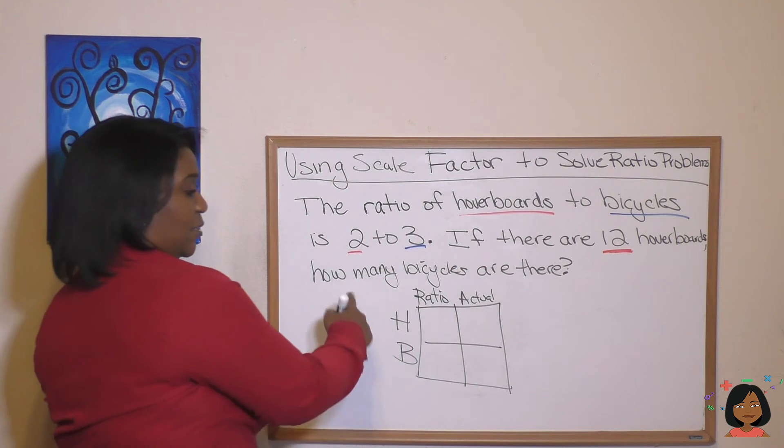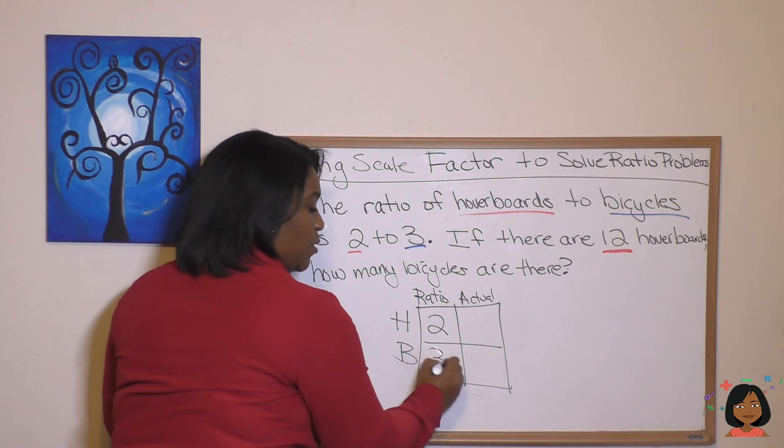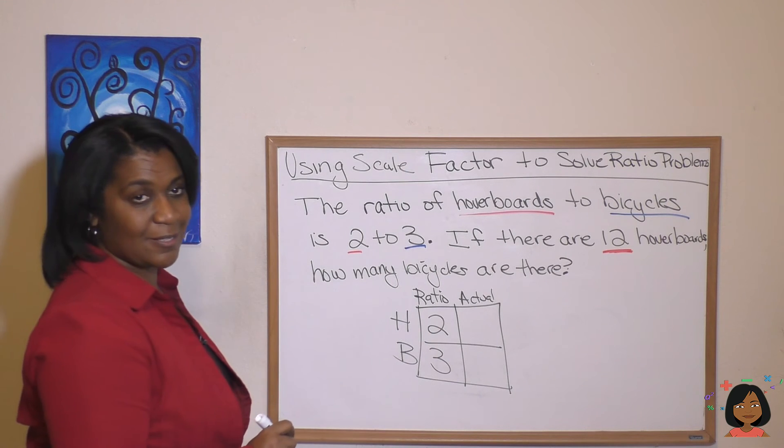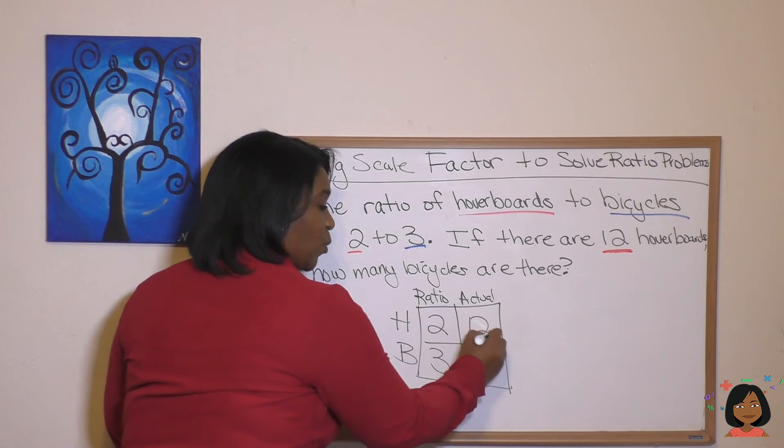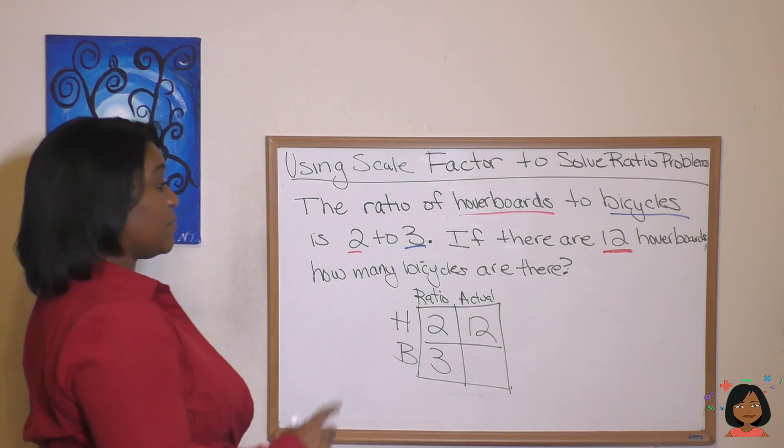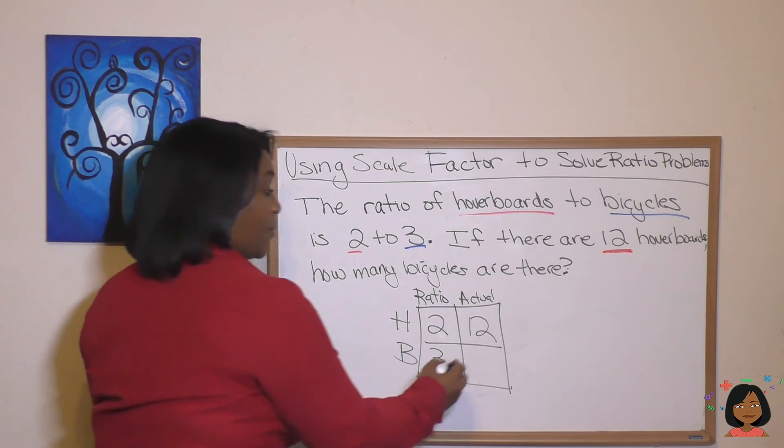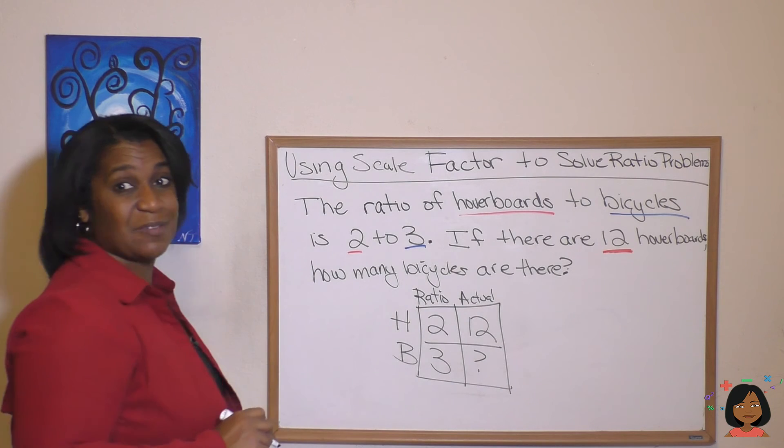Now let's fill it in with the information that we have. Ratio of hoverboards to bicycles is two to three. So we're going to do two for hoverboards and three for bicycles. If there are 12 hoverboards, we're going to put under actual bicycle, 12 hoverboards. How many bicycles are there? So I'm going to put a question mark next to bicycles.